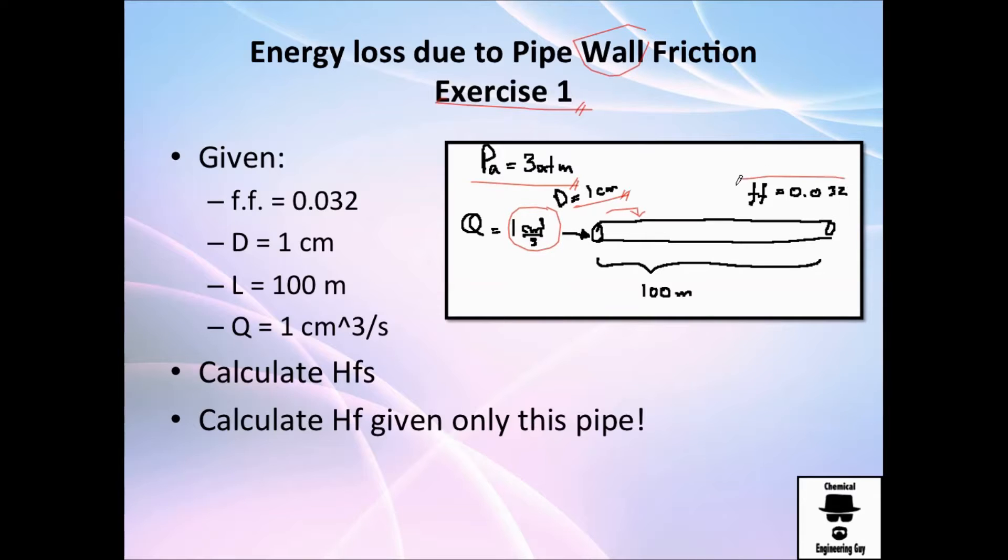And let's say we already calculated the Reynolds number and we got this friction factor right here. So they tell you to calculate the friction loss due to the pipes wall. So how do we do that? Recall the equation. Let's do it here. It's right here, the equation.